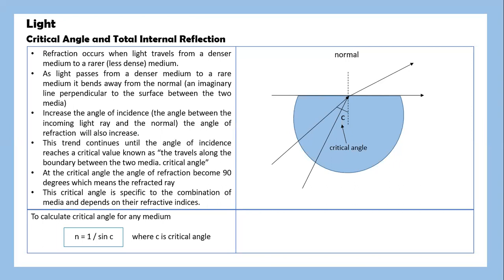Critical angle and total internal reflection. Reflection occurs when light travels from a denser medium to a rarer, less dense medium. As light passes from the dense medium to a rare medium, it bends away from the normal, an imaginary line perpendicular to the surface between the two media. As we increase the angle of incidence, the angle between the incoming light waves and the normal, the angle of refraction will also increase. This trend continues until the angle of incidence reaches the critical value known as the critical angle, where light travels along the boundary between the two media.